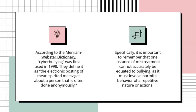It is important to remember that one instance of mistreatment cannot accurately be equated to bullying, as it must involve harmful behavior of a repetitive nature or action. Even though many people call one instance of harassment on the playground bullying, that really isn't an accurate characterization.